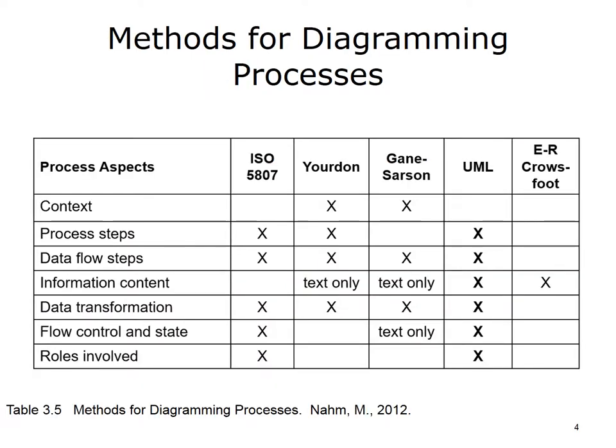Each of the methods for diagramming a process covers different process aspects. Unified Modeling Language has diagrams to represent each of the process aspects that we are interested in for process analysis and redesign. These include use case diagrams that represent the context in which the system operates, process and data flow steps, information content, any information transformations, the order or sequence of steps, including flow control and state, and the roles of the persons completing the steps. There are 13 different types of UML diagrams. We will cover three of them here.